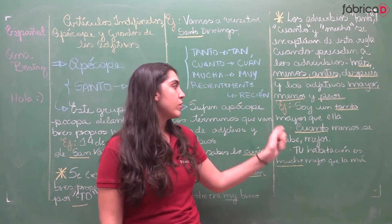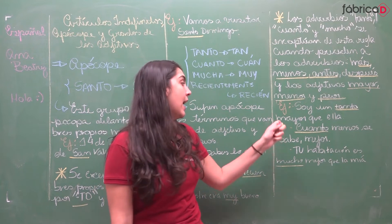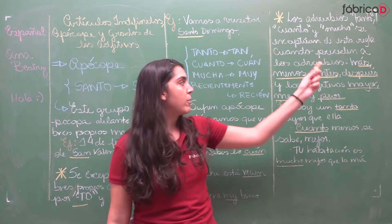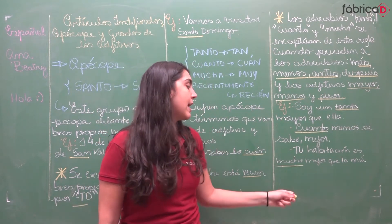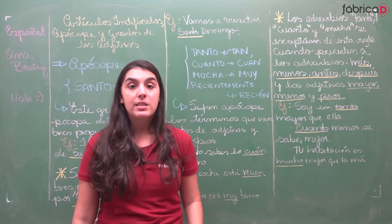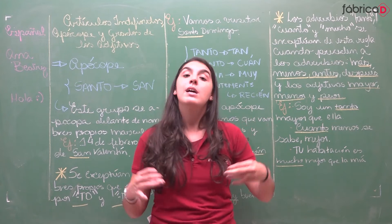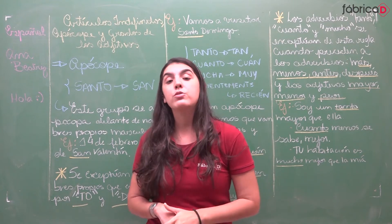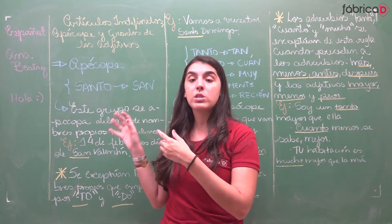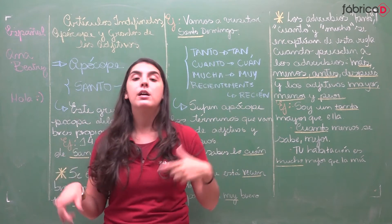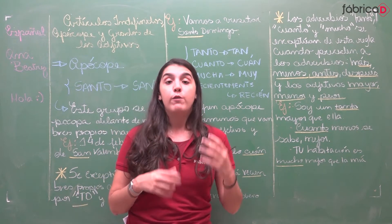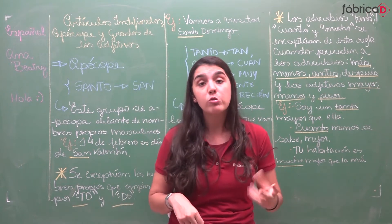Exemplos disso: 'Soy un tanto mayor que ella' — aqui o 'tanto' sem apócope, e o 'mayor'; 'cuanto menos se sabe, mejor' — o 'menos' que está na exceção; 'tu habitación es mucho mejor que la mía' — o 'mucho' continua sendo 'mucho', não vira 'muy', e o 'mejor' que está aqui na exceção. É importante saber a exceção? Sim. Se você já sabia a exceção por conta dos advérbios, seria mais fácil entender aqui as exceções para esses advérbios também. Então a gente viu quando o 'santo' vira 'san', o 'tanto' vira 'tan', o 'quanto' vira 'cuan', o 'mucho/mucha' vira 'muy', e o 'recientemente' vira 'recién'.